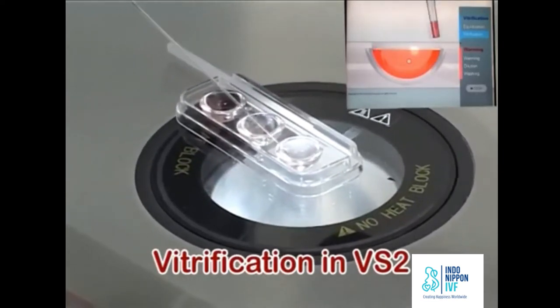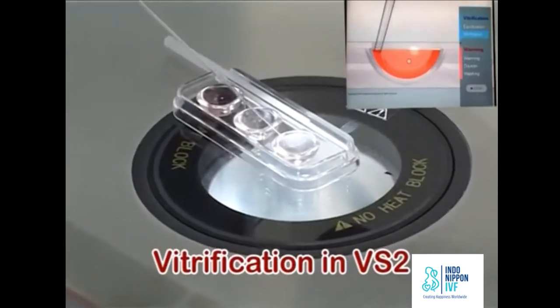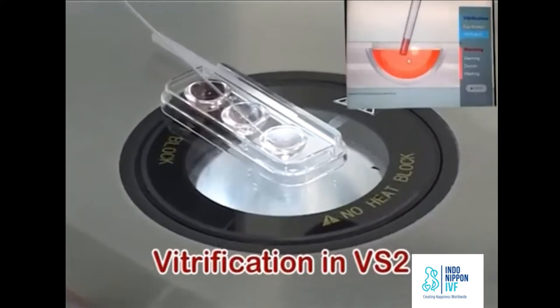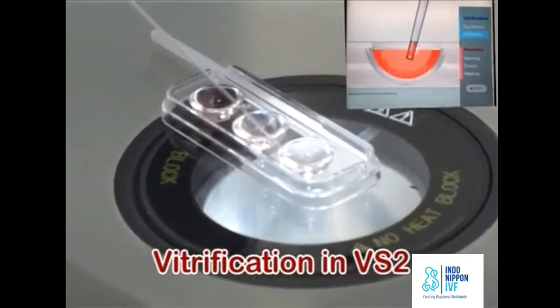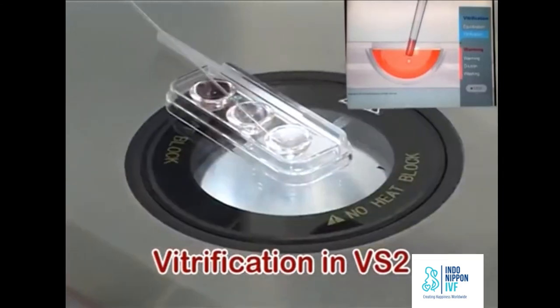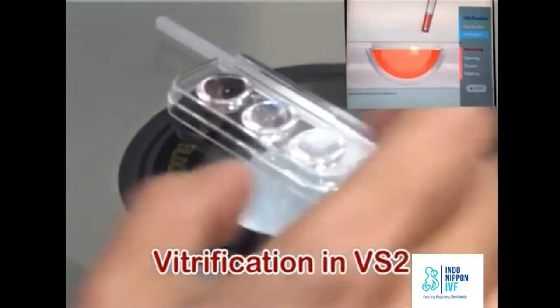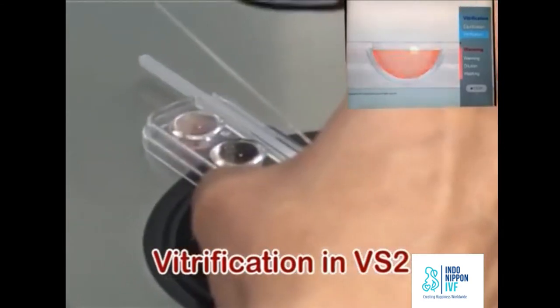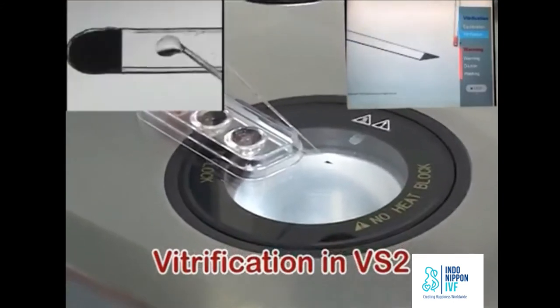Expel VS-2 around the oocyte and mix the solution around the oocyte to exchange the remaining previous solution. This step is completed when the flat shrinking of the oocyte is observed. Aspirate the shrunk oocyte with minimal amount of VS-2 at the tip of the pipette. This entire step in VS-2 should be completed within 10 to 20 seconds.